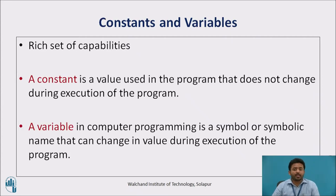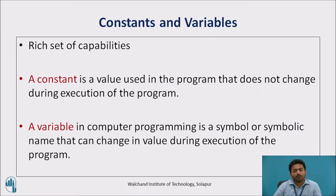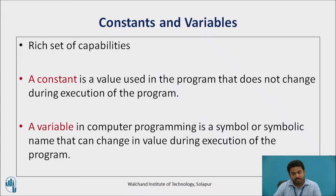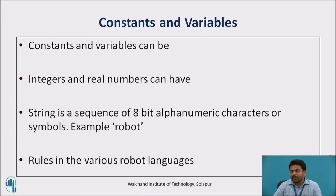Coming towards constants, variables, and other data objects: like other computer programming languages, a robot language should permit the programmer to specify constants, variables, and other forms of data for use in the program. The second-generation robot languages possess a rich set of capabilities for accomplishing the definition of these data objects. A constant is a value used in a program that does not change during execution of the program, whereas a variable is a symbol or symbolic name that can change in value during execution of the program.